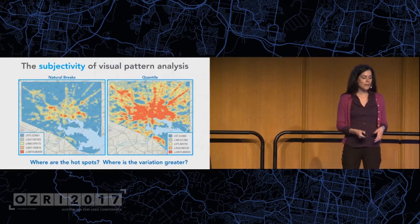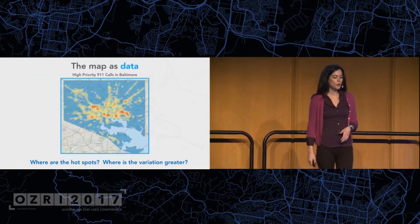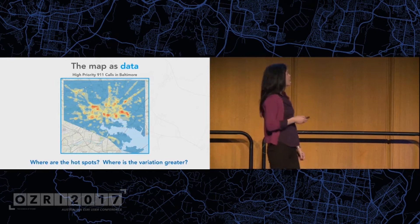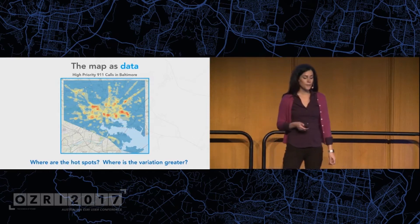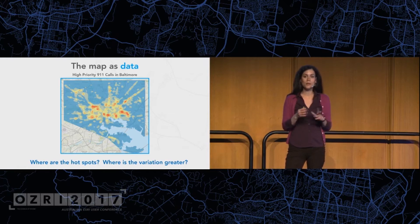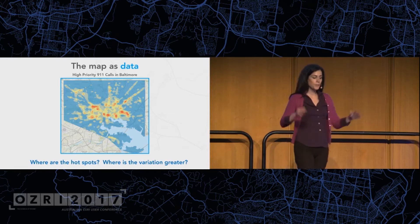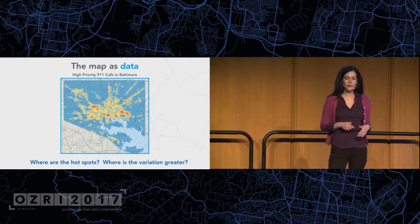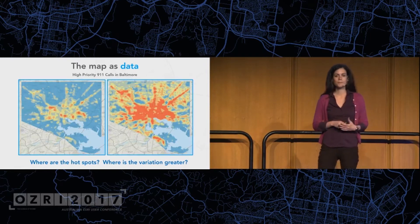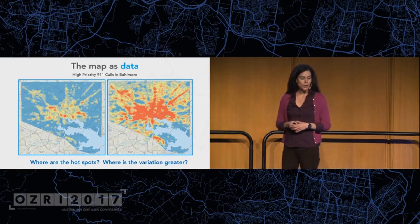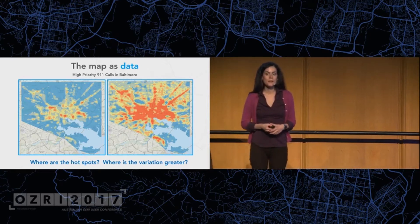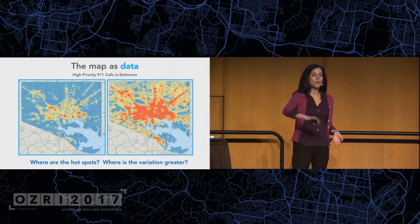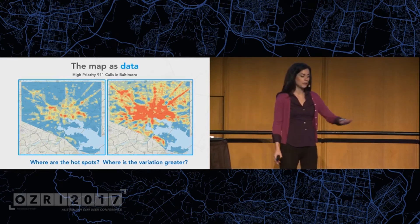One common thing to do would be to create a density surface like this one. Now we do have a better understanding of the data — we see more 911 calls in the red areas and fewer in the blue areas. So I made this map and have a little better understanding. But then I made this other map, and now it looks like the problem is much more severe. The map on the right makes it look like we have a lot more 911 calls than the map on the left.